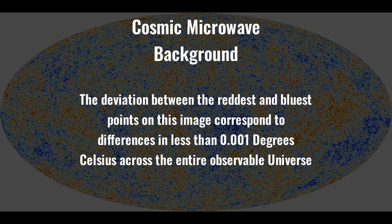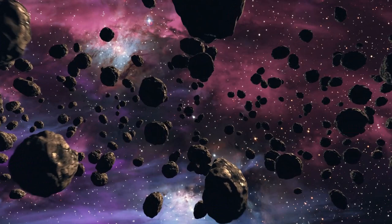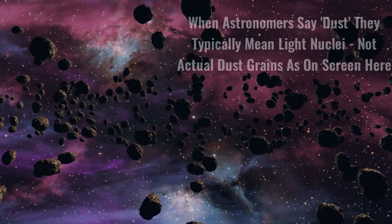Olber's original solution to this paradox was that the light from really distant stars is obscured by interstellar dust. This dust, which is really light nuclei floating around in space, blocks the light and is why the sky is mostly dark. This is not a resolution to the paradox, sadly.